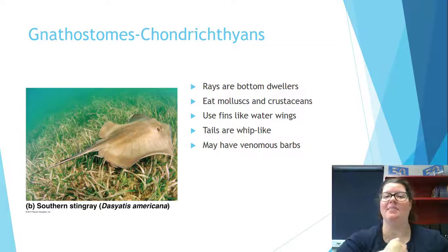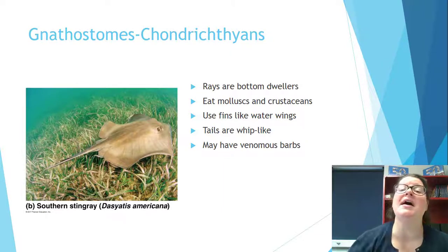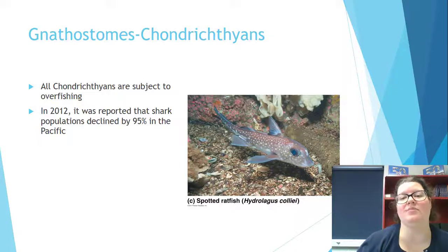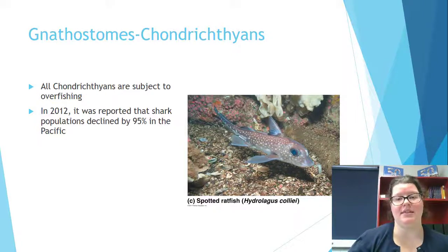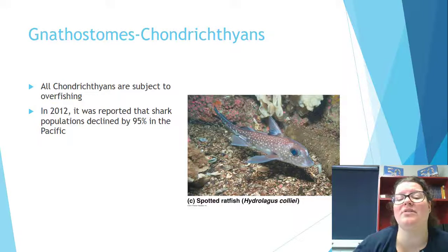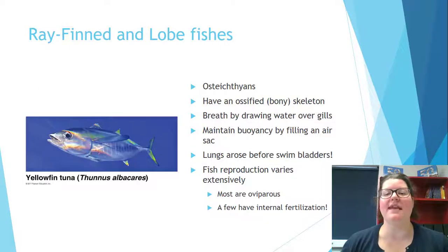Many doctors think Steve Irwin might have survived if he hadn't pulled the barb out, because he did damage to his heart in doing so — with the barb in, surgery might have saved him. Chondrichthyans are subject to overfishing. You often eat shark without knowing it — scallops at restaurants are sometimes cut-up shark meat. In 2012 it was reported that shark populations declined by 95 percent in the Pacific, largely due to trawling, which destroyed habitats and food sources.